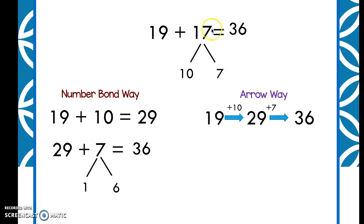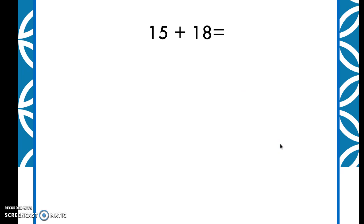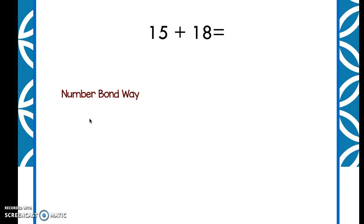Today we're going to be solving problems with two two-digit numbers and solving them two ways: the number bond way and the arrow way. Let's see which one you like better. Let's try this problem: 15 plus 18. I'm going to give you a minute to solve this the number bond way yourself, and then we can check it together. Push pause and take a moment — I'll see you in a bit.